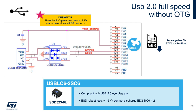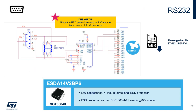Similar considerations apply for RS232. In this case, the RS232 transceiver is the most exposed IC to the outside through the connector. As with USB, there are two main requirements for the protection device: the ESD protection functionality itself, and low capacitance introduced to the communication lines to keep the RS232 protocol compliant. You can find the recommended schematic and layout in our STM32L4 reference board resources.